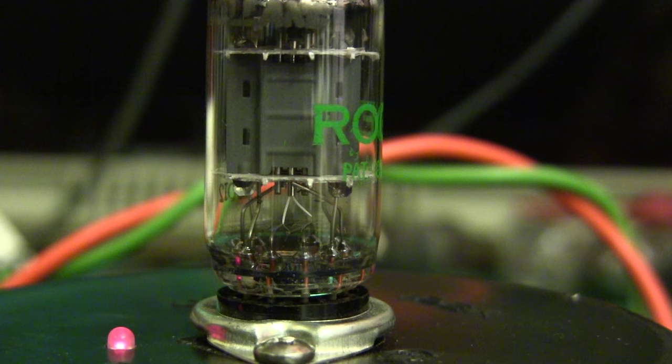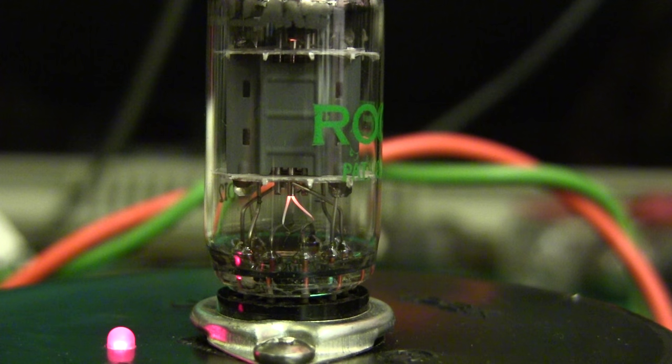All right so now what I'm going to do is I'm going to push the button and apply full filament voltage now and watch the vacuum tube. Here we go. Bingo, no filament flash and that's how easy it is to save your very expensive tubes.